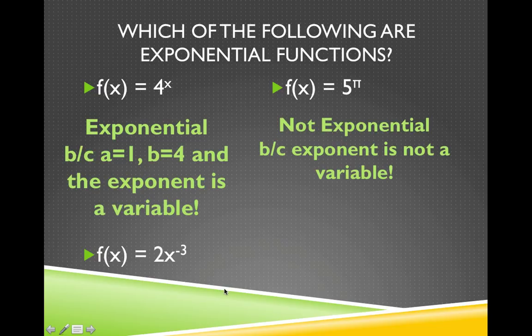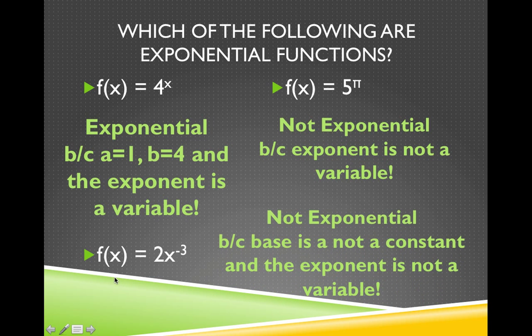The last one, f(x) equals 2x to the negative third power is not exponential because the base here is x, it is a variable, not a constant. The base in an exponential function has to be a constant, a number. It cannot be a variable. And here, the exponent is the constant. The exponent in an exponential must be a variable, not a constant. So this one is not exponential.